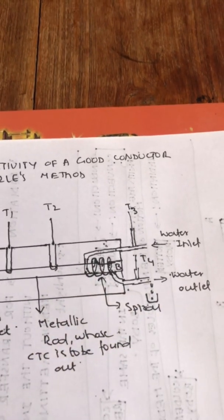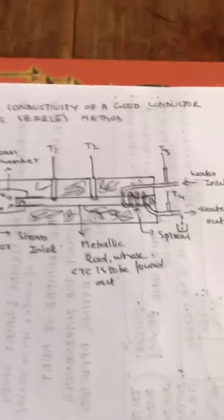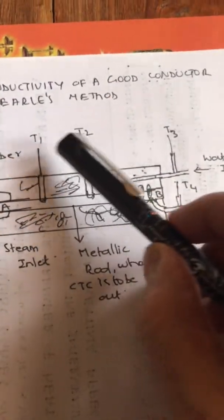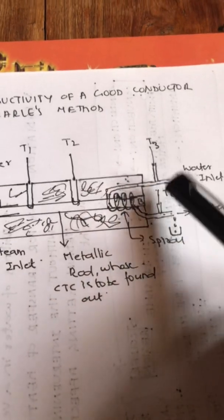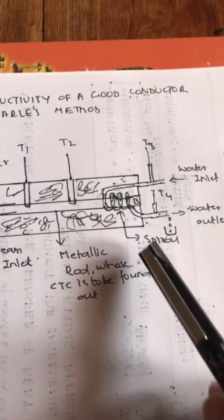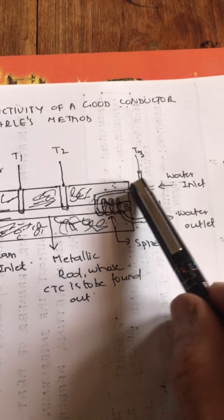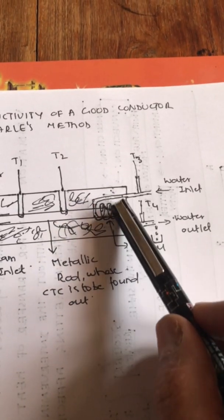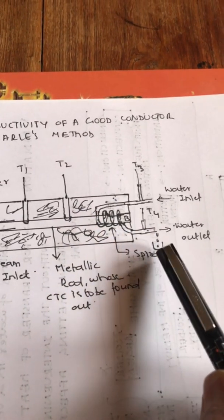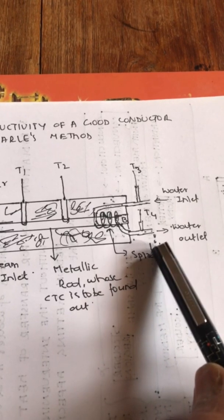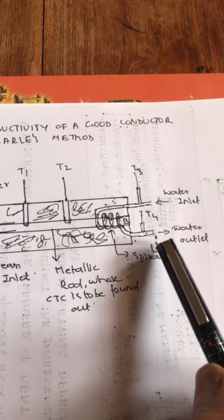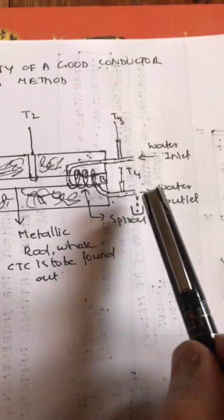The water coming out of the spiral will be hotter compared to the water going in. So we have four thermometers — T1, T2, T3, and T4. We collect the outgoing water for a certain period of time and then take its mass. We will go through how to do that a little later.